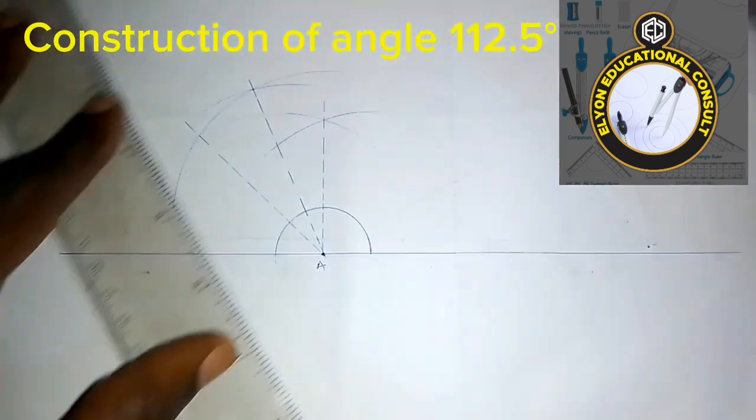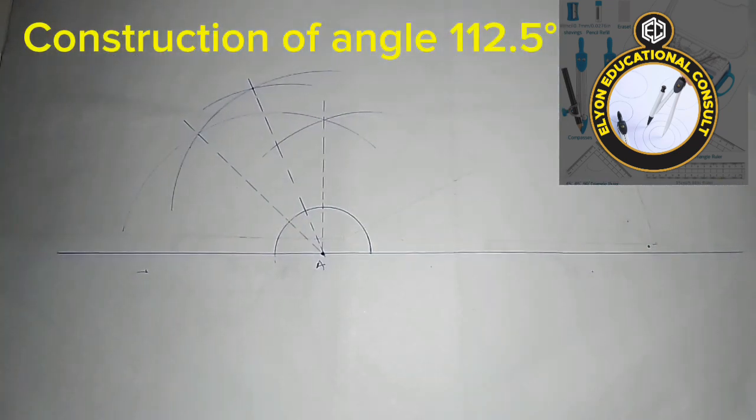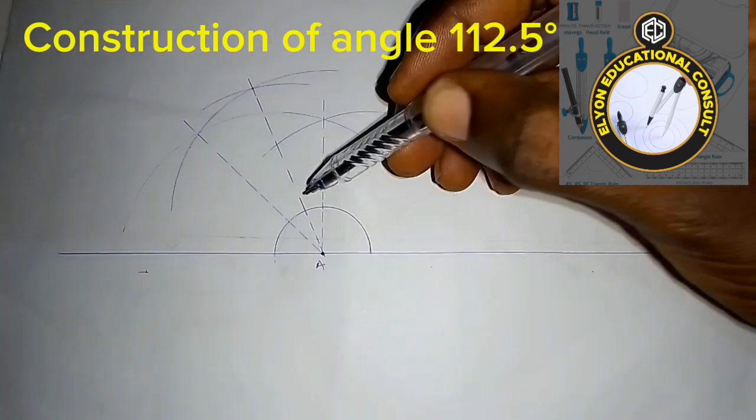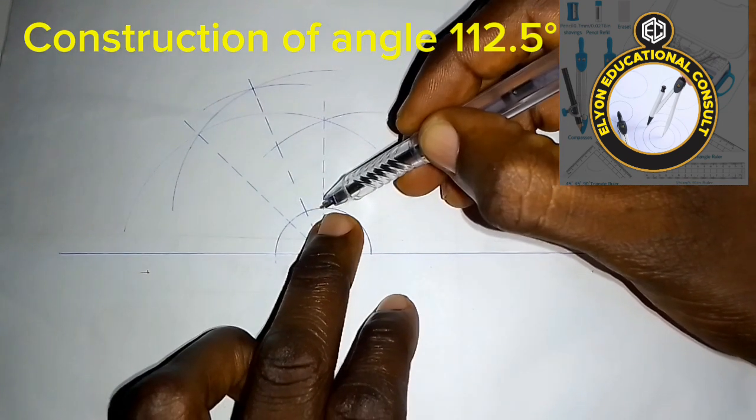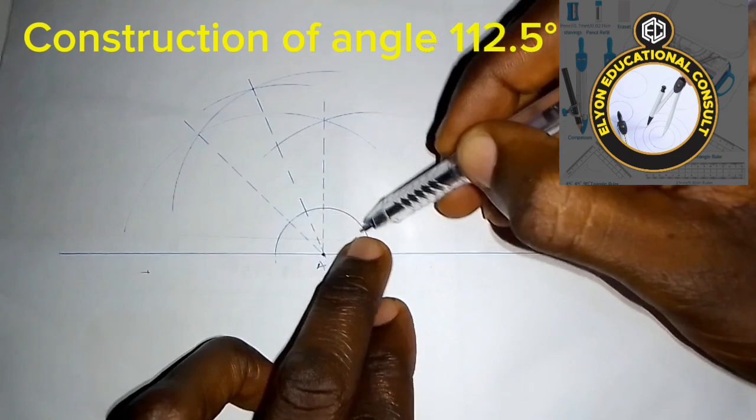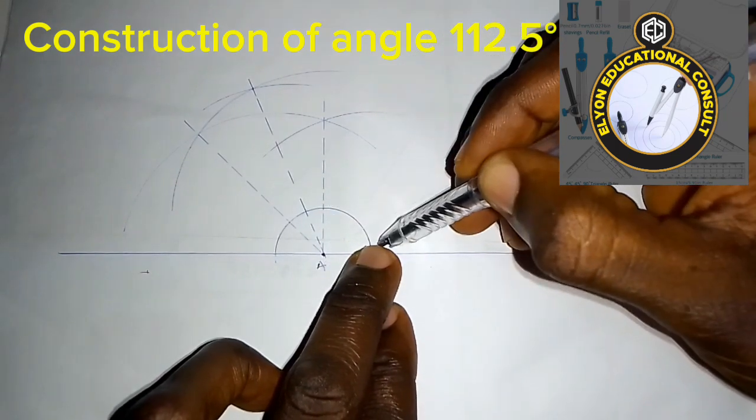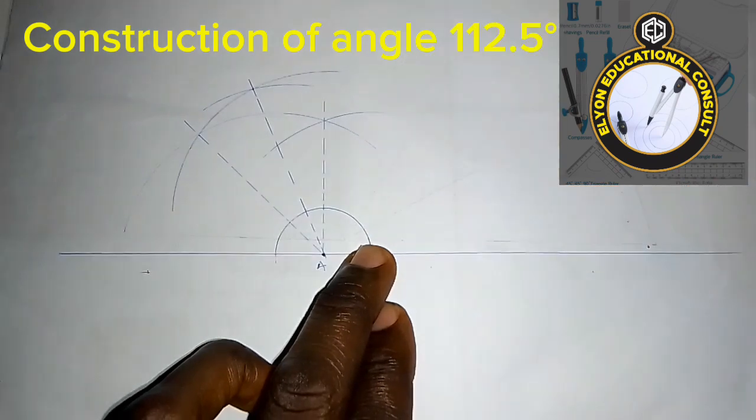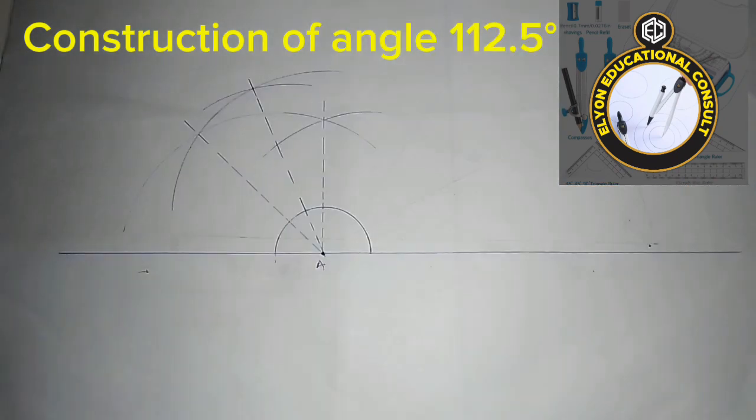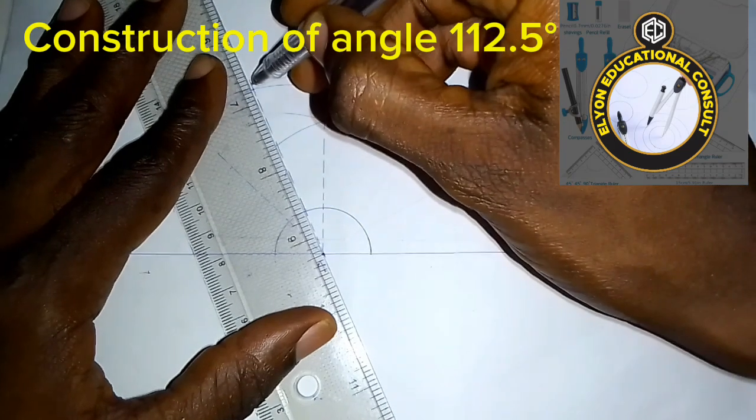All right, so this angle here is 22.5 degrees. When it is added to this 90, it's going to give us angle 112.5 degrees.